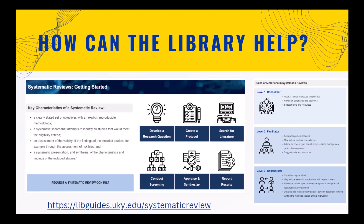Level three is collaborator, meaning we are part of your review team. Co-authorship is required for this level. We are included in all consultations with the review team, advise on review type, citation management, protocol registration and development, develop and run the searches, and write the methodology section of the manuscript. The research guide has sections covering how to develop a question, create a protocol, search the literature, conduct screening, and appraise and report results.